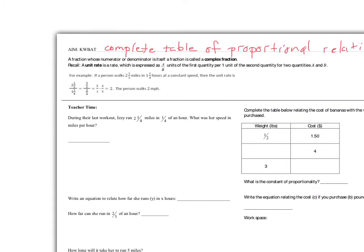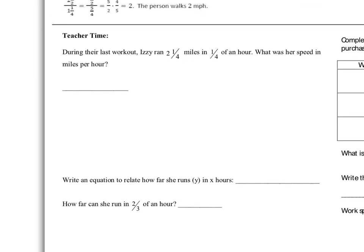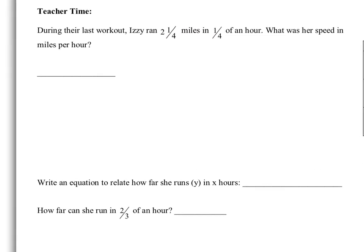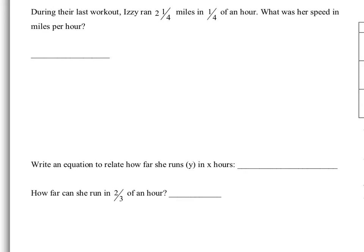To get started, we're actually going to begin with an equation that doesn't have a table. It says during their last workout, Izzy ran two and one-fourth miles in one-quarter of an hour. What is her speed in miles per hour? So basically this is asking us for the constant of proportionality.